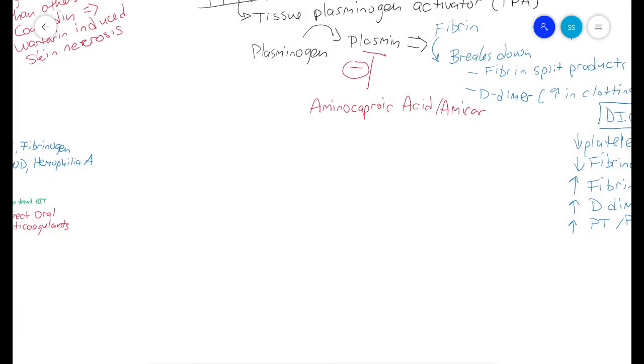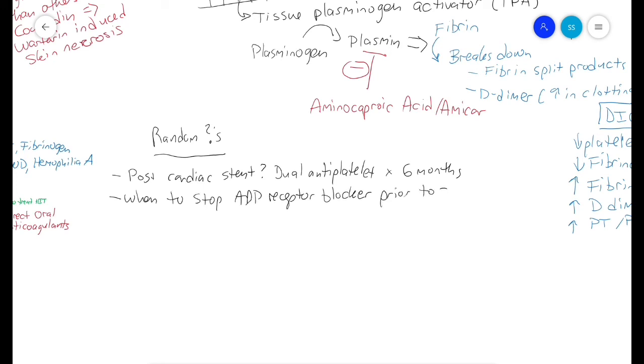A few random questions to finish up. Post-cardiac stent, you need dual antiplatelet therapy for about 6 months. When should you stop ADP receptor blockers such as clopidogrel (Plavix) prior to surgery? You should stop them for about 5 days. Remember that direct platelet inhibitors like aspirin need to be stopped for 7 days (a full week - the half-life of platelets in the body). Other drugs such as ticagrelor (Brilinta), which are ADP receptor blockers, only need to be stopped 3 to 5 days prior to surgery.